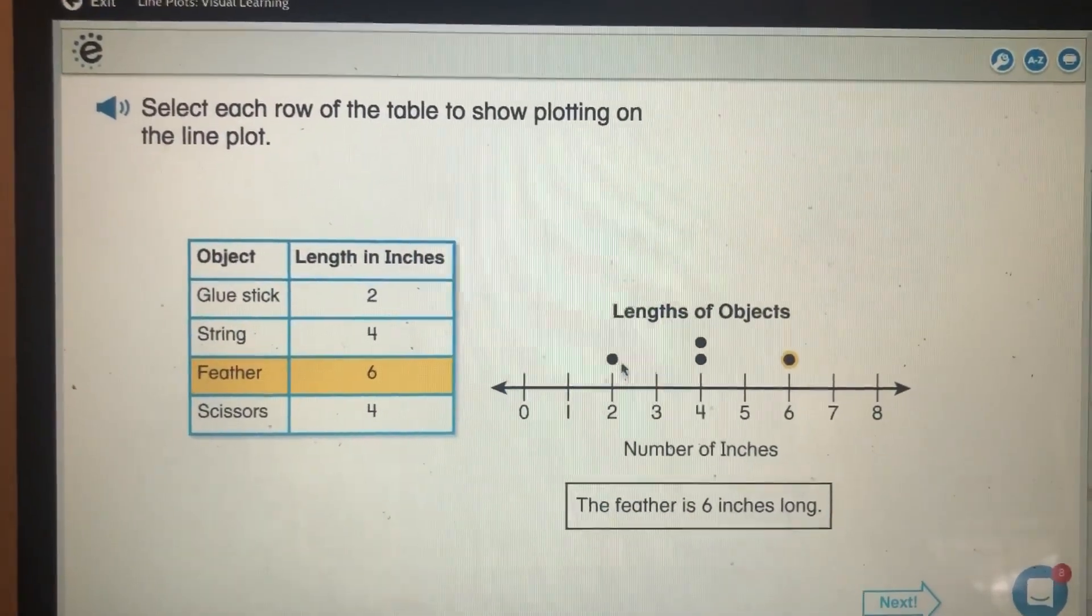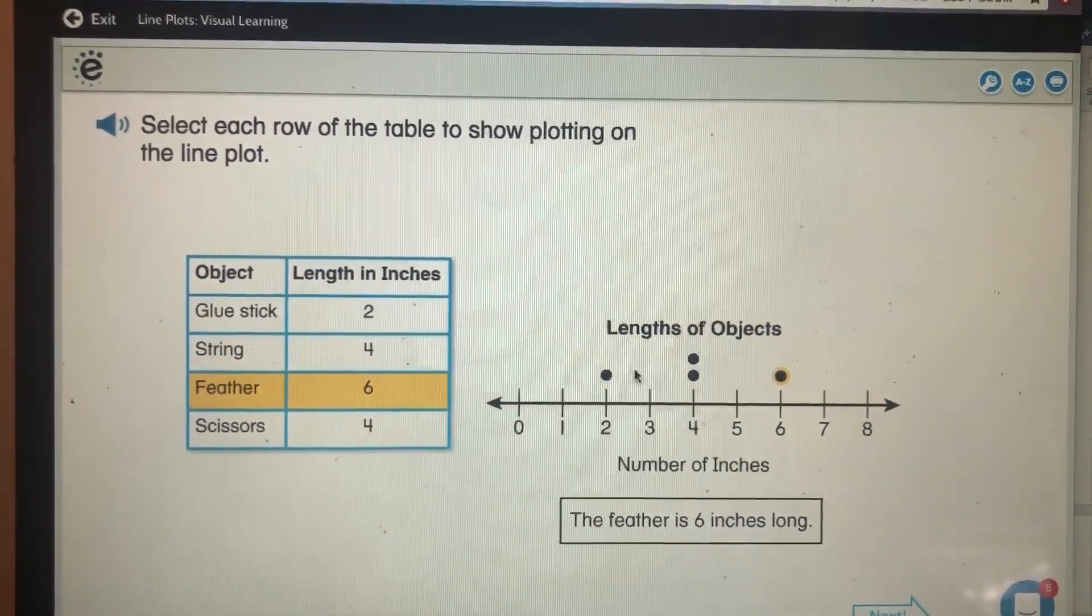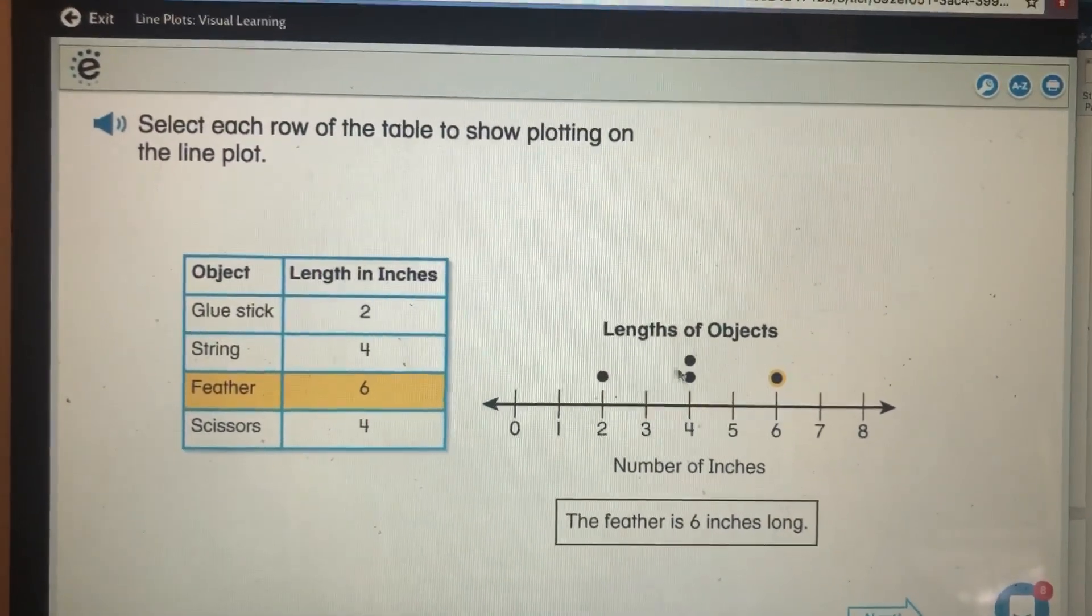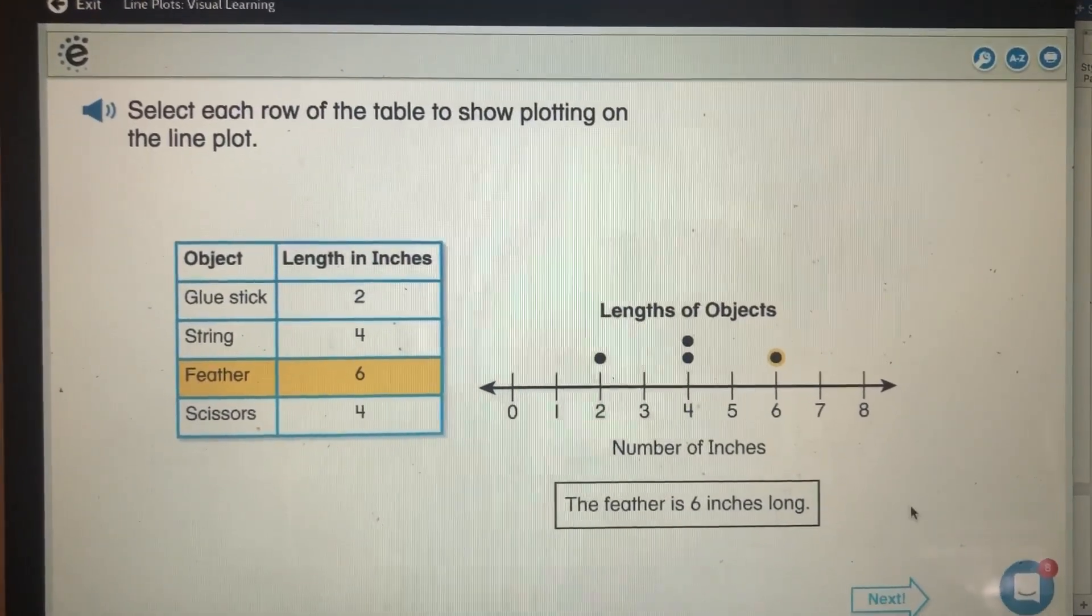So it gets one dot per item at the length that it is. There's only one thing that's two inches long, there's two things that are four inches long, and one thing that is six inches long.